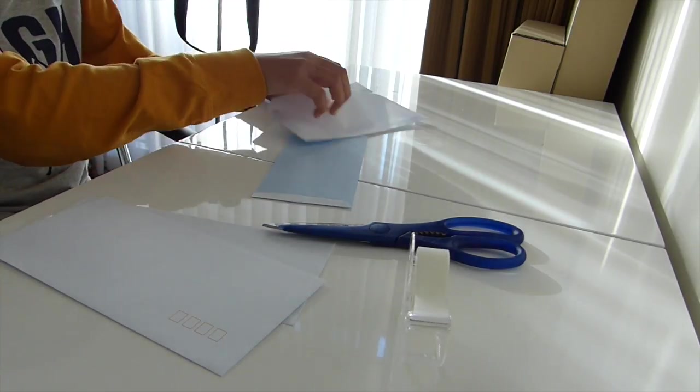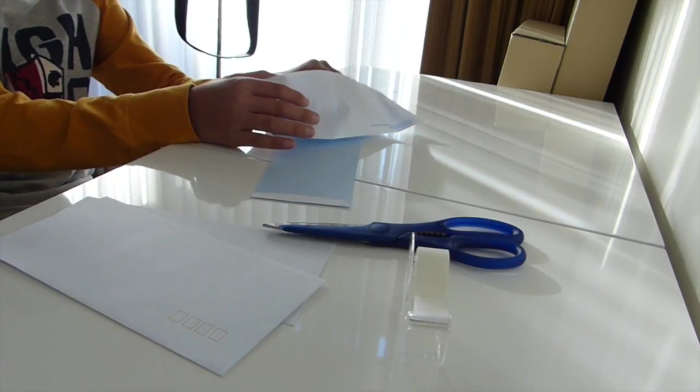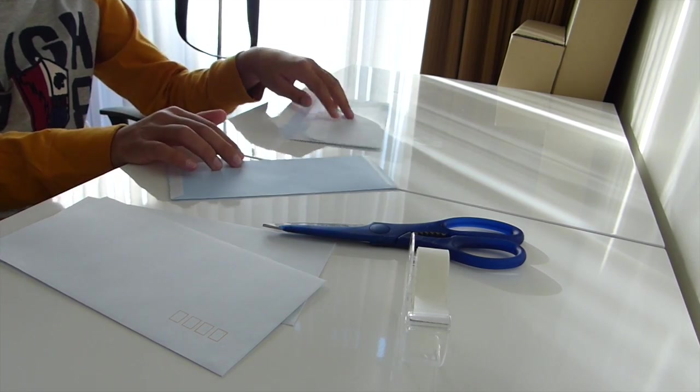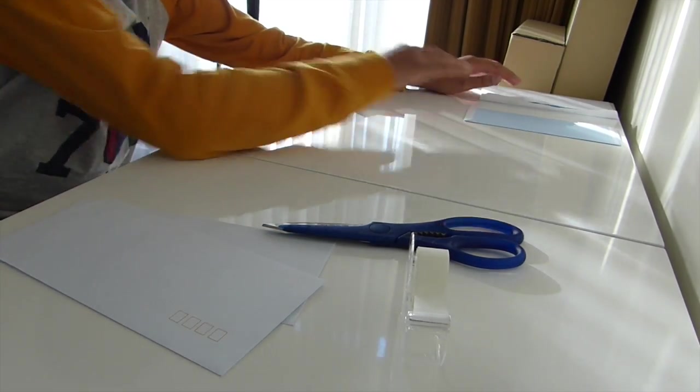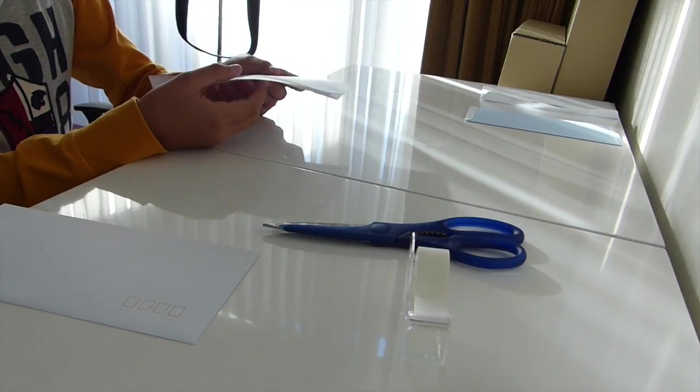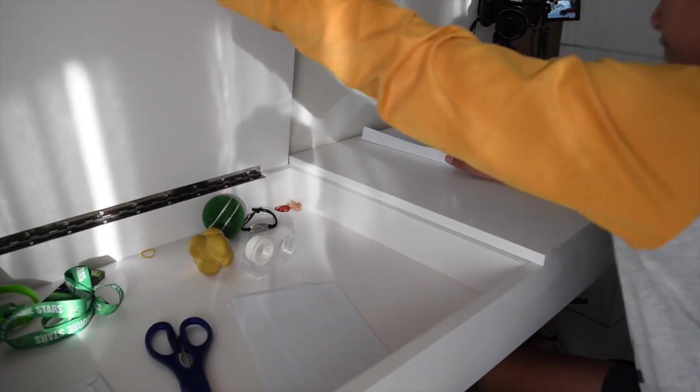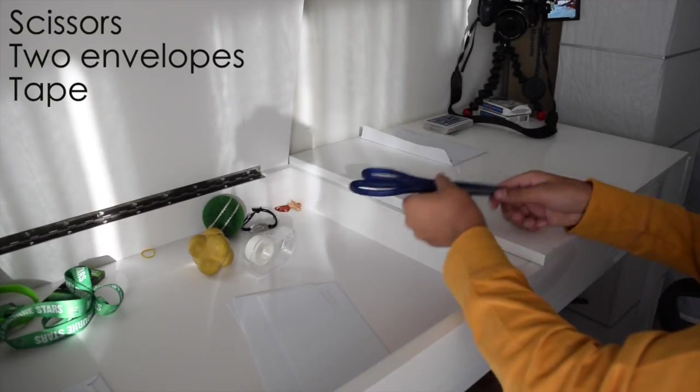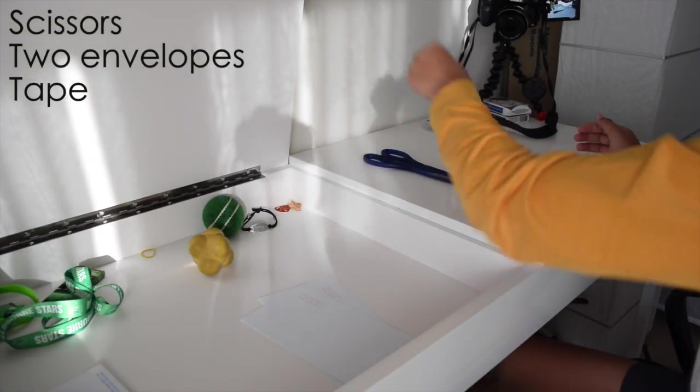So, because you need that pattern to be matched, what I had to do was, if I set this over here, you have to actually make it out of another envelope. So, let's get started. What you need, if I grab my supplies out, you're going to need scissors, two envelopes, and some tape. And that's it.